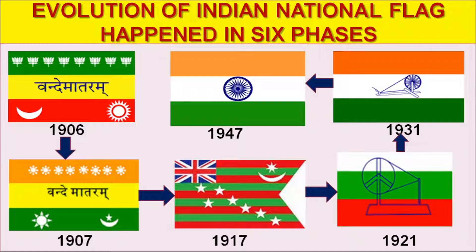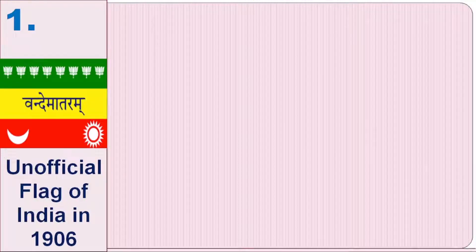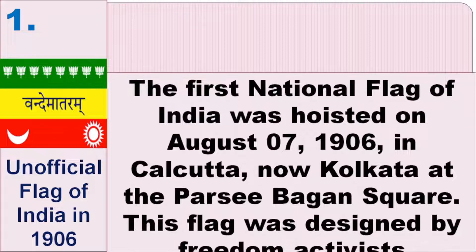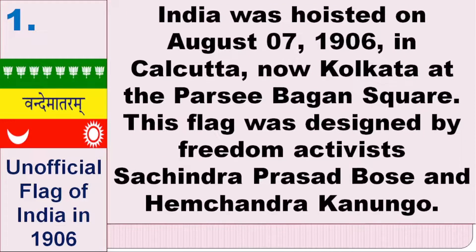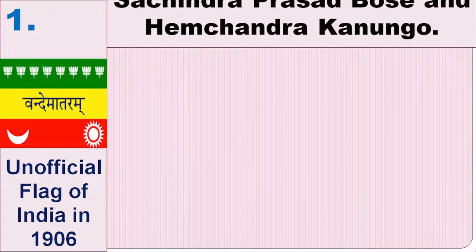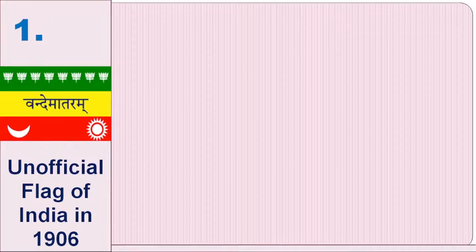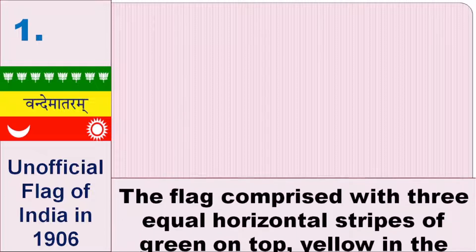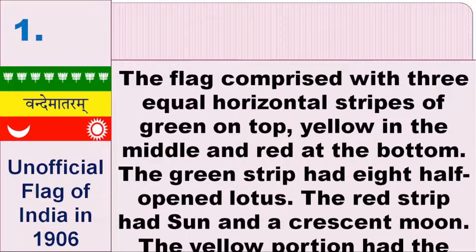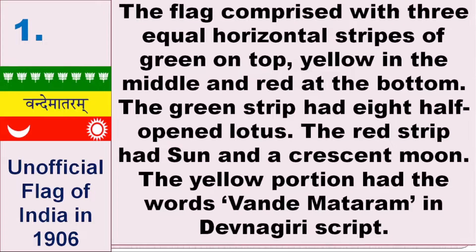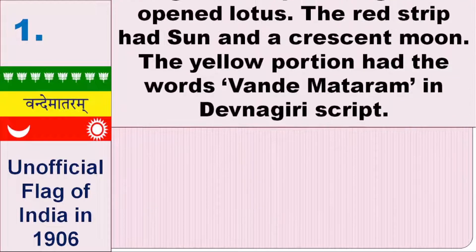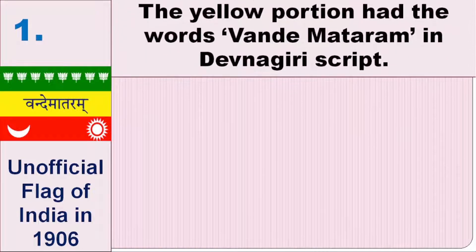The evolution of the Indian national flag happened in six phases. In the first phase, the first national flag of India was hoisted on August 7, 1906, in Calcutta, now Kolkata, at the Parsi Bagan Square. This flag was designed by freedom activists Sachindra Prasad Bose and Hem Chandra Kanungo. The Kolkata flag comprised three equal horizontal strips of green on top, yellow in the middle, and red at the bottom. The green strip had eight half-open lotuses, the red strip had a sun and crescent moon, and the yellow portion had the words Bandi Mahatram in Devanagari script.